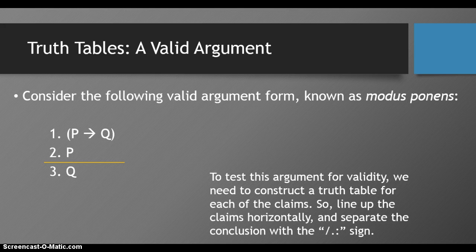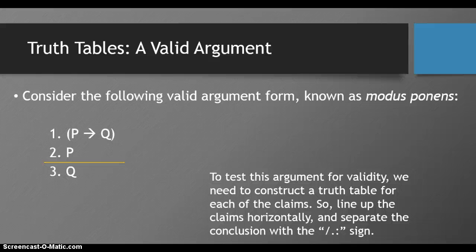To test this argument for validity, we need to construct a truth table for each of the claims. So line up the claims horizontally, and separate the conclusion with this sign we'll call the conclusion sign.